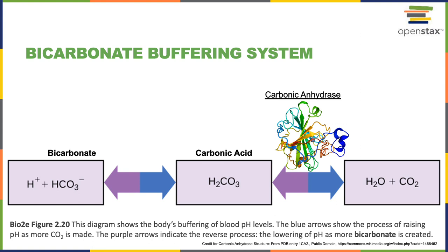This is very important because the respiratory system can remove carbon dioxide from the body in the process of external respiration. The urinary system can remove excess hydrogen ions and bicarbonate ions from the body. The bicarbonate buffering system is therefore an important site where the respiratory and urinary systems regulate the pH balance of the body, by either removing carbon dioxide or removing bicarbonate or hydrogen ions, shifting the bicarbonate buffering system either towards bicarbonate or further towards carbonic acid.